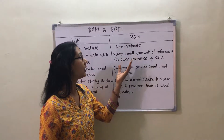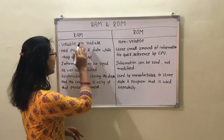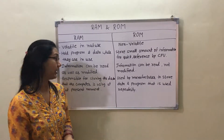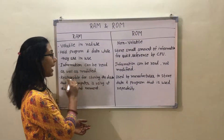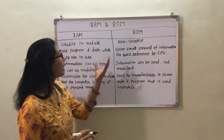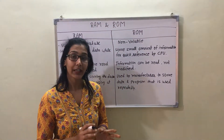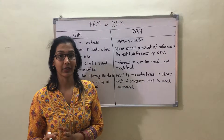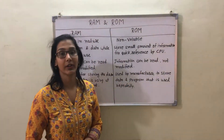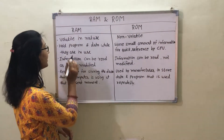RAM is a read-write memory, meaning we can read as well as modify data. While ROM is read-only memory — it is only for reading purposes, not for modification.